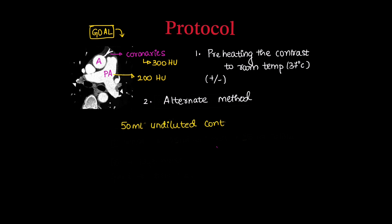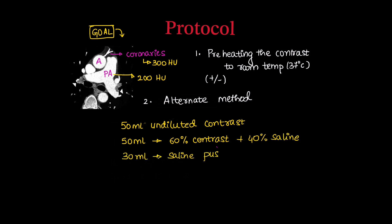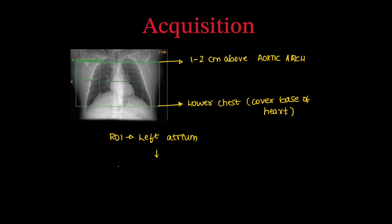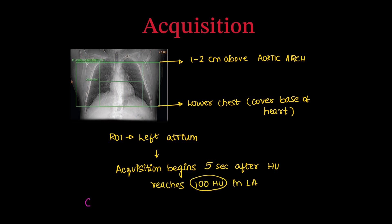An alternative injection protocol uses: first phase — 50 mL undiluted contrast; second phase — 50 mL of 60% contrast and 40% saline mixture; third phase — 30 mL saline push; total of 130 mL. Acquisition is performed from 1–2 cm above the aortic arch to the lower chest, ensuring coverage of the base of the heart, in a cranial-to-caudal direction. The region of interest is kept in the left atrium, and acquisition starts 5 seconds after attenuation reaches 100 HU in the left atrium.